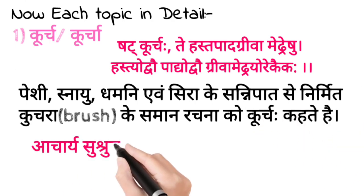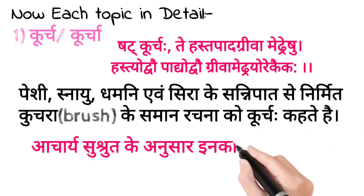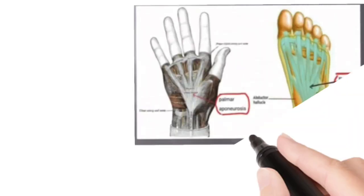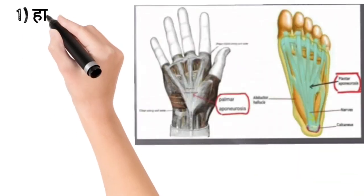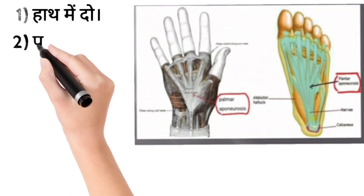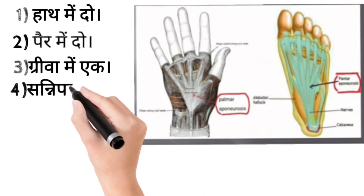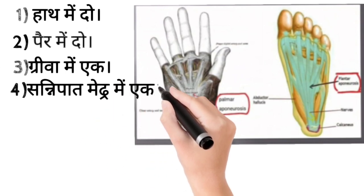Kuchra hoota hai brush. Acharya Sushrut ki anusar is ki sankhya kitne hooti hai 6. Dhamni hooti hai arteries, Sira are veins. Yahan pe main picture attach kar rahi hoon. Haath me jo hoota hai usko bolta hai palmar aponeurosis, pair me pair anusar par paad sish hai plantar aponeurosis. Haath me two hole, pair me two, Greeva me one.